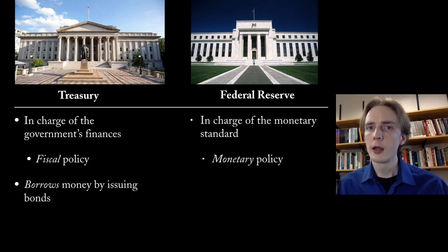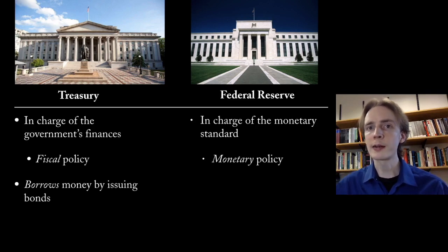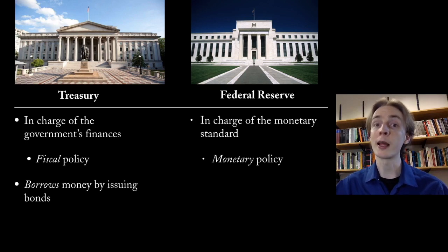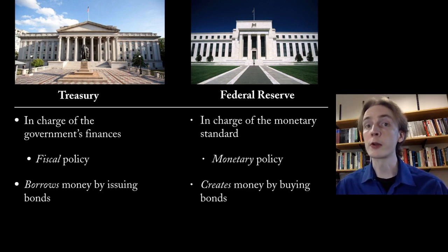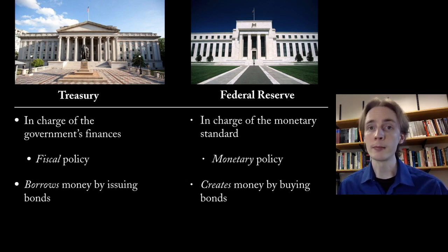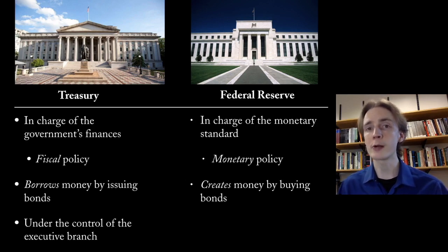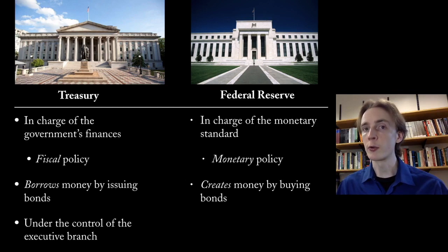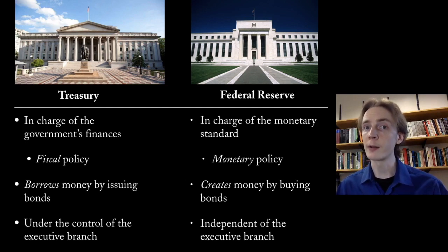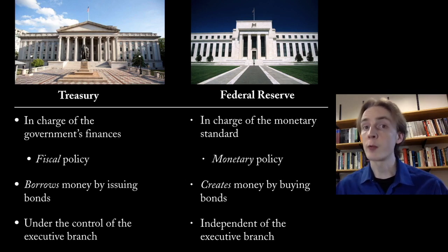Both the Treasury and the Fed issue assets. The Treasury is able to issue Treasury bonds — the government borrows money and in exchange issues an IOU, a Treasury bond, a promise to pay later. Whereas the Federal Reserve issues money that's not a promise to pay anything. So the Federal Reserve is able to buy up those bonds and create money in exchange. The Treasury is run by the executive branch — it's under the control of the executive branch because it's actually doing the spending the government needs done. Whereas the Federal Reserve is independent — at least ideally independent. The President can't tell the Fed what to do.